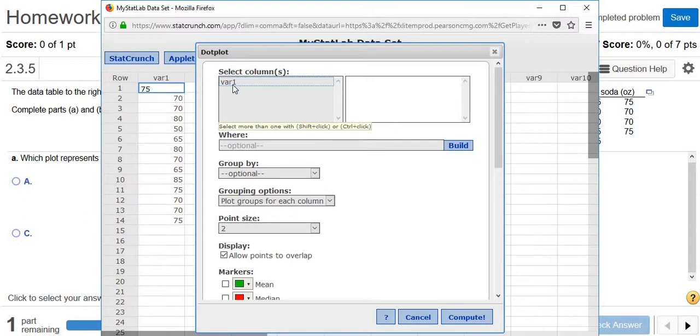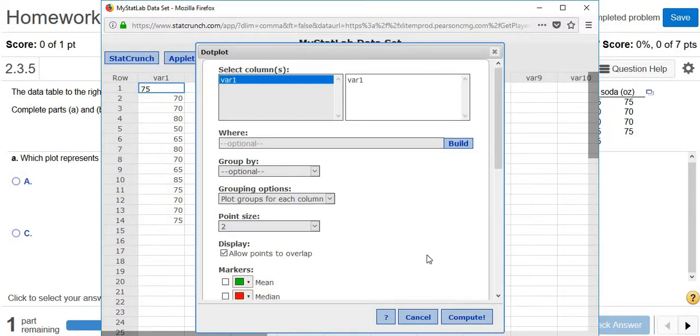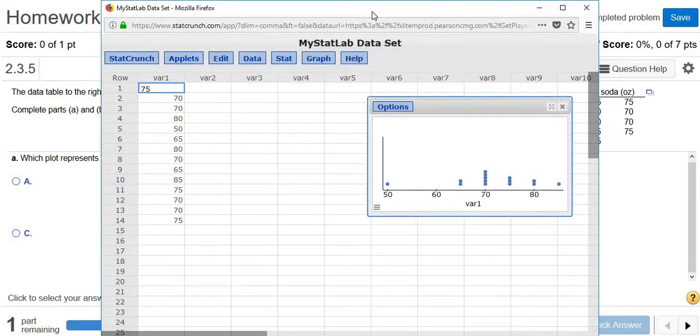And then see where it says select columns? Well, the data is stored in the first column here, var1, variable1. So you left click on where it says var1. Then you just click compute, and there's the dot plot.